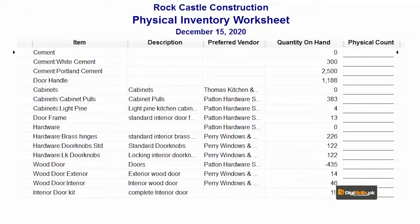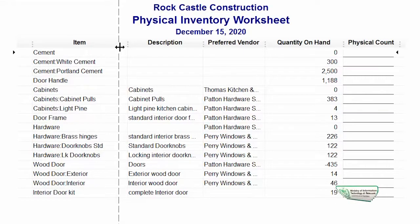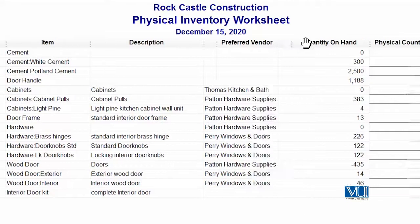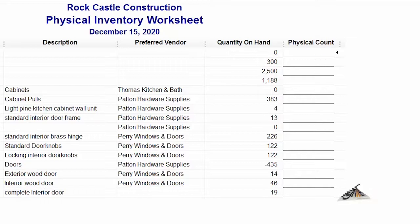یہ جو physical inventory worksheet آپ کو نظر آ رہی ہے، اس میں کافی ساری information screen پر موجود ہے۔ اسے سب سے پہلے اپنی مناسبت سے set کریں — جیسے Excel میں کرتے ہیں، cursor لے جائیں اور columns کی width صحیح کریں تاکہ description وغیرہ clearly نظر آئے۔ اس طرح تمام items listed ہیں، description موجود ہے، preferred vendors کا column ہے، پھر physical count کا column ہے، اور آخری column خالی ہے۔